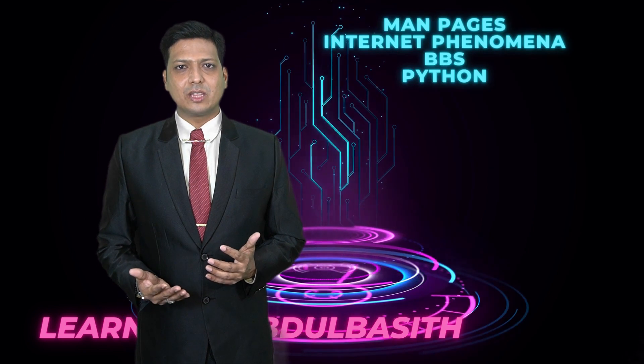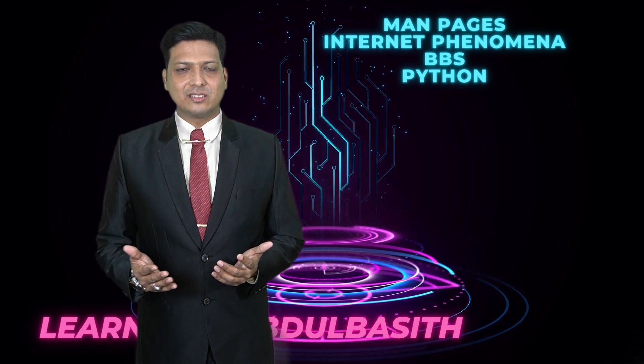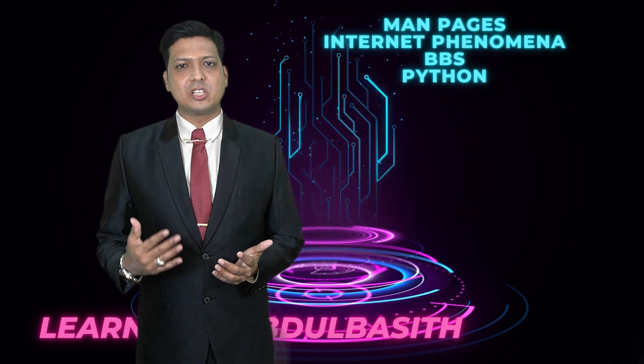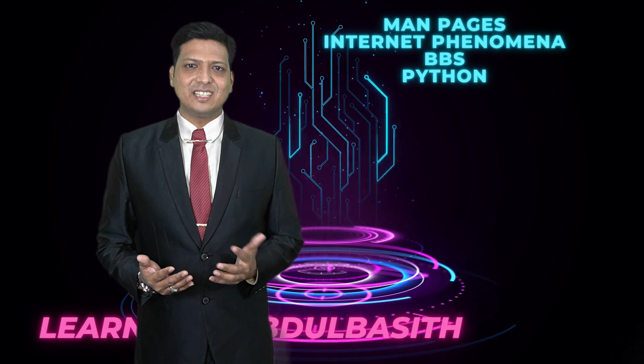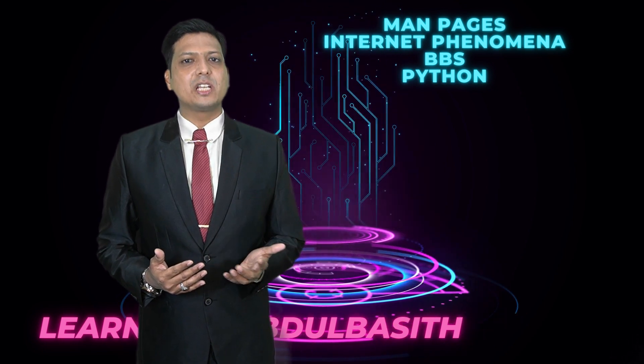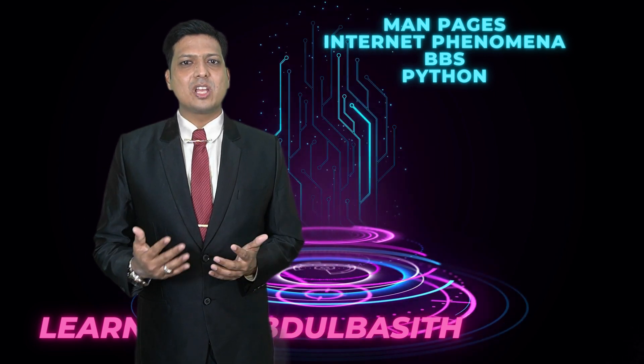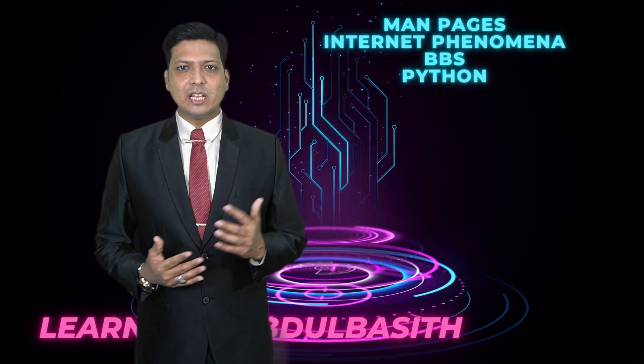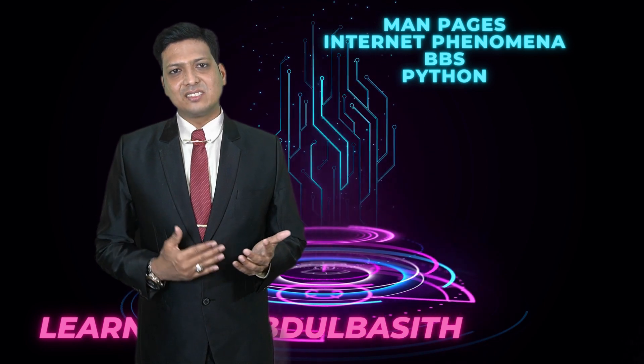What does it consist of? It consists of man pages—a kind of software, data, and program. Internet phenomena means what are the viral things we're watching on the internet, like memes, viral videos, viral shots, and viral things that are running or downloaded or shared in millions or billions of views. That is known as internet phenomena.